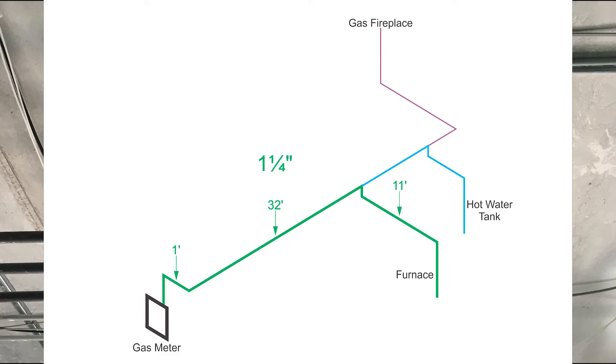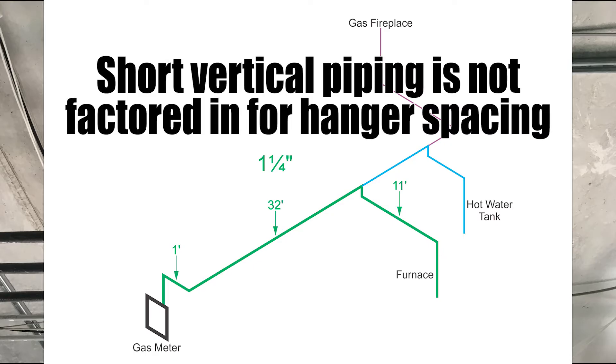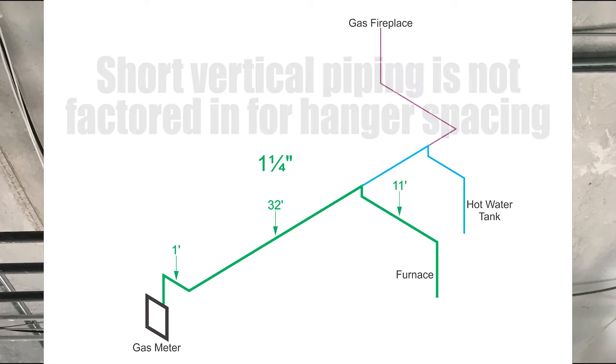Let's start with one and a quarter inch piping. All this piping is in a residential house and the risers or drops going up to the furnace, hot water tank, or gas fireplace are relatively small. We are not going to factor in the vertical piping. Let's add up the length of the horizontal piping only.